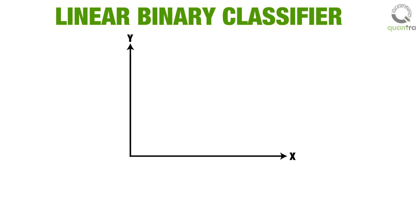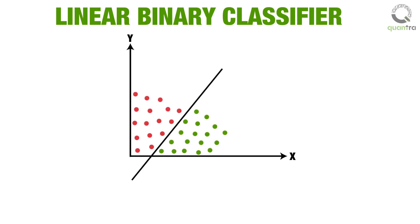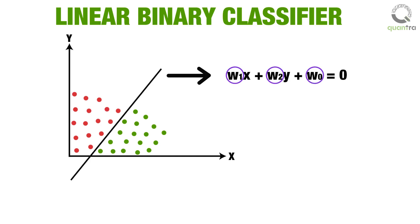The training dataset is represented by red and green dots. The aim of the linear classifier is to arrive at a straight line separating the space into two halves, such that the positive and negative outcomes lie on either side of the line. The straight line dividing the space will have the following equation. Each coefficient W can be thought of as a weight corresponding to the feature.